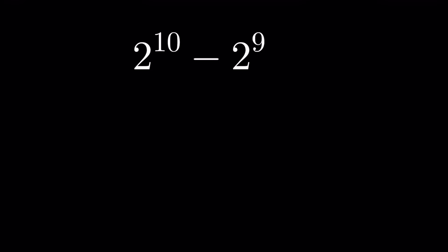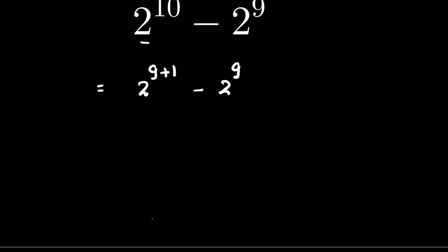2 to the power 10 minus 2 to the power 9 — can you solve this without using a calculator? Let's try. So 2 to the power 10, we can write it as 2 to the power 9 plus 1. Now we have an identity where a to the power m plus n is equal to a to the power m times a to the power n.